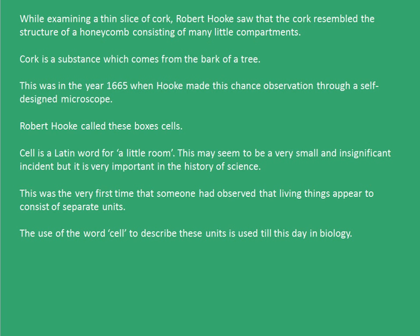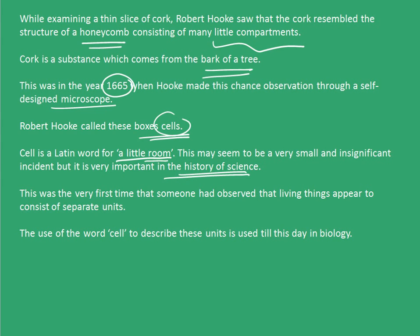Let's begin with the introduction. While examining a thin slice of cork, scientist Robert Hooke saw that the cork resembled the structure of a honeycomb, consisting of many little compartments. Cork is a substance which comes from the bark of a tree. It was in the year 1665 when Hooke made this chance observation through a self-designed microscope. What Robert Hooke called them was cells. Cell is a Latin word which means a little room. This was the very first time that someone had observed that living things appear to consist of separate units, and the use of the word cell to describe these units is still used in biology.